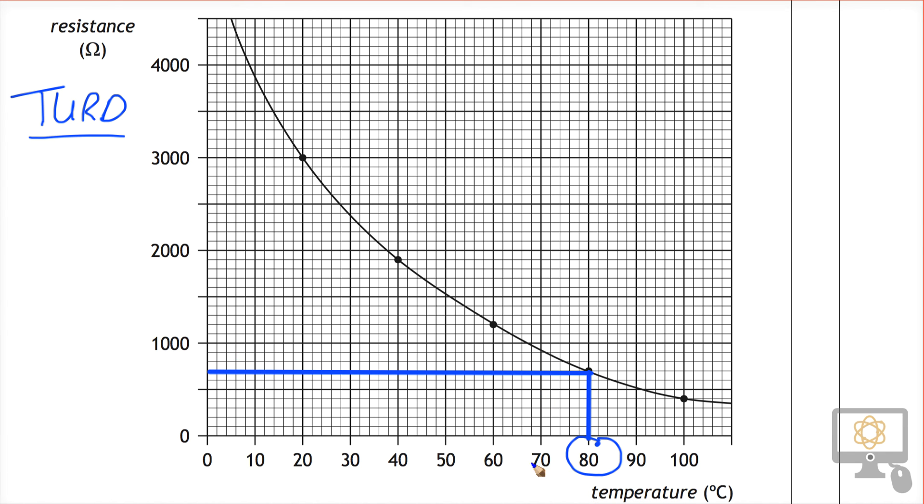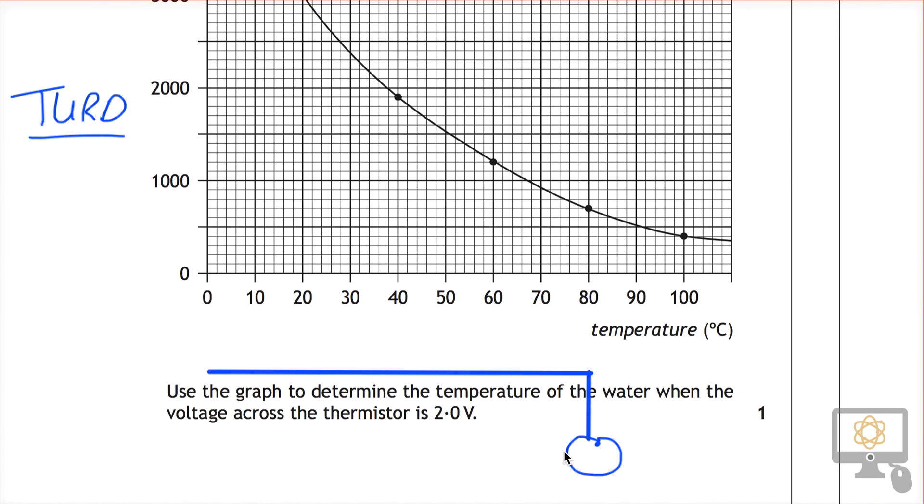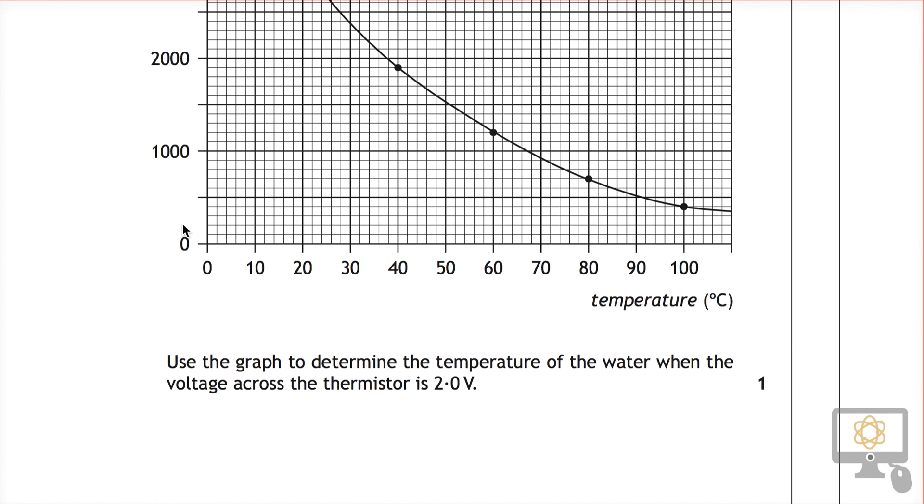But that's how we find it. That's essentially all we have to do. Of course, what I will say, when you're actually giving your answer down below, you must give your answer not as 80, but as 80 degrees Celsius. If you don't write the unit, you won't get the mark. Thank you.